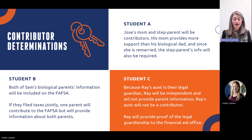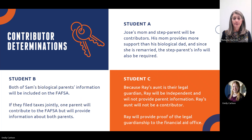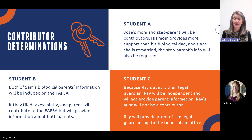For student C: Ray has lived with their aunt since they were three years old, and their aunt is their legal guardian. They don't have contact with their biological parents. Because Ray's aunt is their legal guardian, Ray will be considered independent for purposes of the FAFSA and will not provide any parent information — Ray's aunt will not be a contributor. Remember that any time a student is in a legal guardianship, they will be considered independent for FAFSA purposes and their legal guardian will never be considered their parent. Ray will be asked to provide proof of the legal guardianship to the financial aid office, most often in the form of a court order.